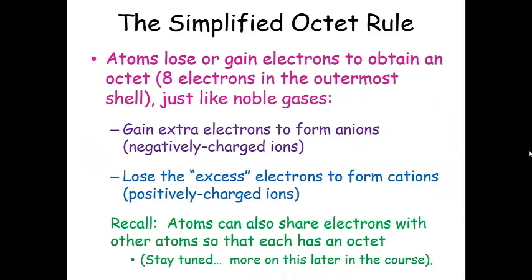So here's our simplified octet rule. So atoms are going to lose or gain electrons to obtain an octet. So remember, that's eight electrons in the outermost shell unless it's helium, which then it'll be two, and this is just like noble gases. So they're either going to gain extra electrons and form anions if they're nonmetals. They're going to lose excess electrons to form cations if they are metals.